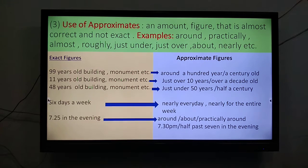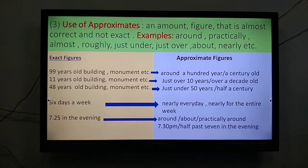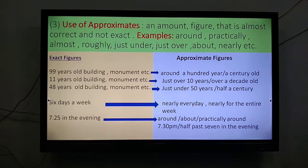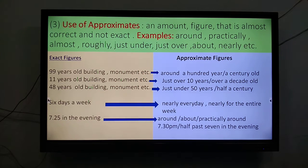In your books, you may get exact figures like 99 years old — this could be a building or a monument. If we write these as approximate figures, we could describe them as around 100 years, or you could also say a century old. For something which is 11 years old, a building or a monument, you could say just over 10 years, or the building is over a decade old.